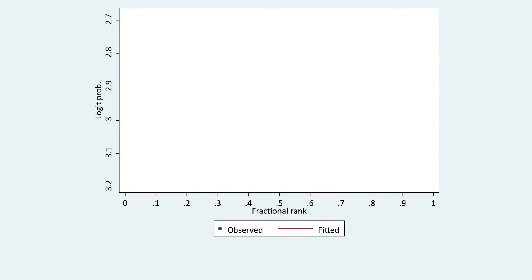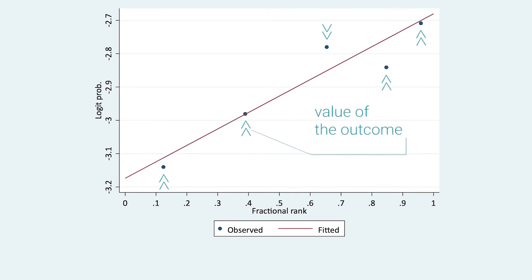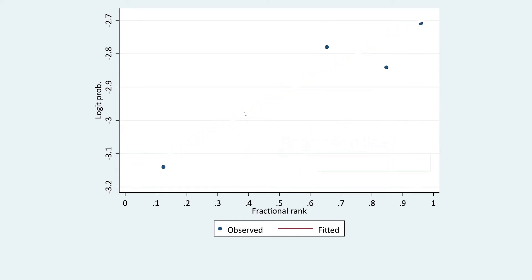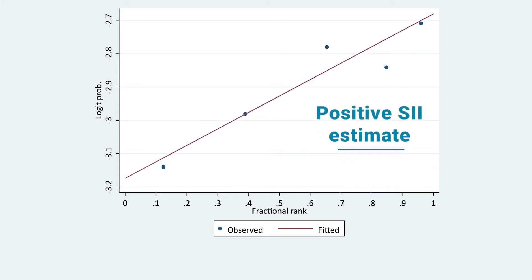This is the default graph of SII. The dots represent the value of the outcome in each group of the ranking variable, while in red we see the regression line. In this example, the outcome increases according to the ranking variable, providing a positive SII estimate.